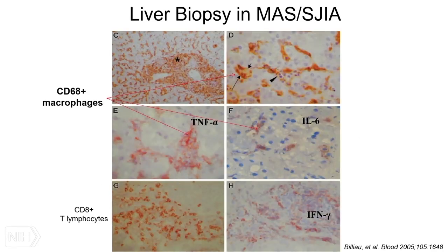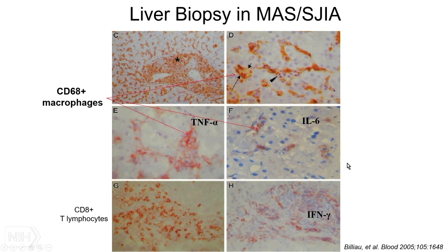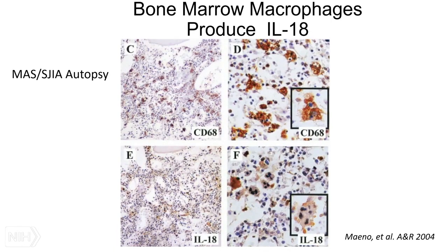Starting with macrophages — in this example, we are looking at a liver biopsy from a patient with MAS. We see massive periportal mononuclear cell infiltration. At higher magnification, you see large Kupffer cells that are clearly activated: they look very plump with foamy cytoplasm, and many exhibit hemophagocytic activity. Interestingly, the same cells also produce massive amounts of pro-inflammatory cytokines, including TNF-alpha and IL-6. Several Japanese studies also showed that these macrophages may produce quite a bit of IL-18.